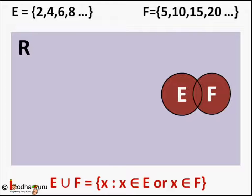So as the name suggests, it is a union of two sets. This includes the entire red area that is numbers 2, 4, 5, 6, 8, 10, 12 and so on.